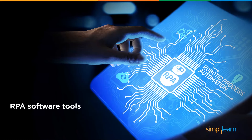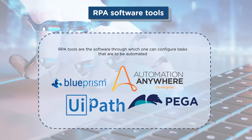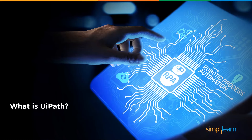Moving on, we have RPA software tools. These tools typically help develop and execute bots. Some of the RPA tools are UiPath, Blue Prism, Automation Anywhere, WorkFusion, among others. In this tutorial, we will execute a bot using the UiPath tool. Before executing the demo test case, let's go ahead and understand what UiPath is and its interface.